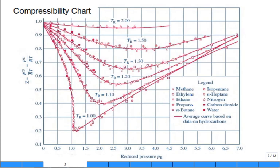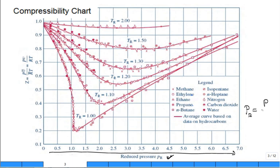Here's a compressibility chart. On the x-axis, they've plotted reduced pressure, P_r. The reduced pressure is the actual pressure of interest of the gas divided by the critical pressure of that gas. They plotted a bunch of gases — methane, ethylene, ethane, propane, et cetera. There are quite a few gases plotted here.